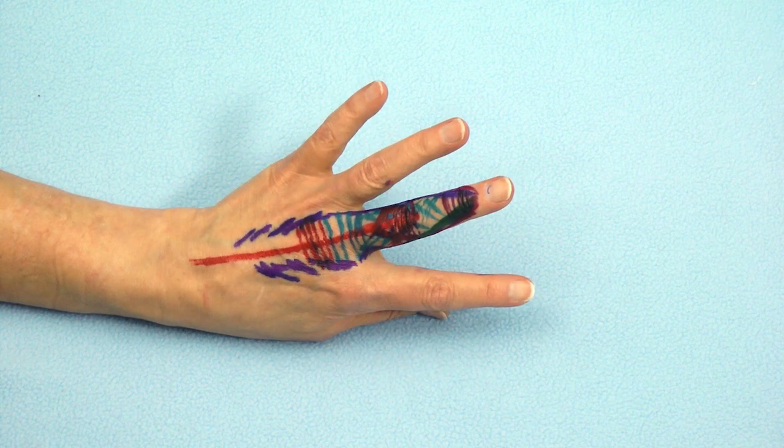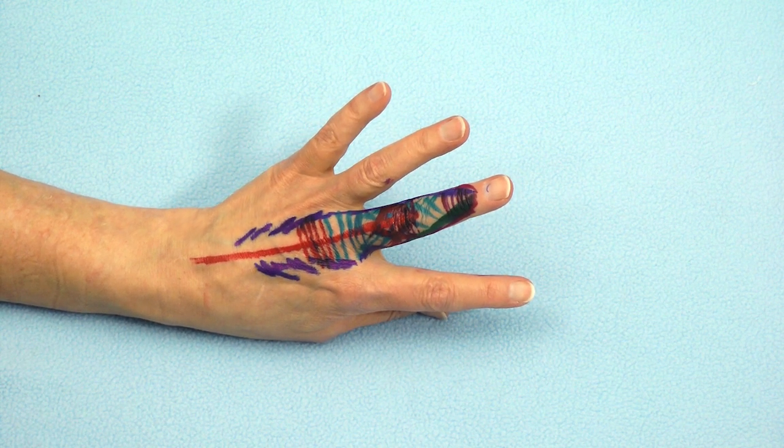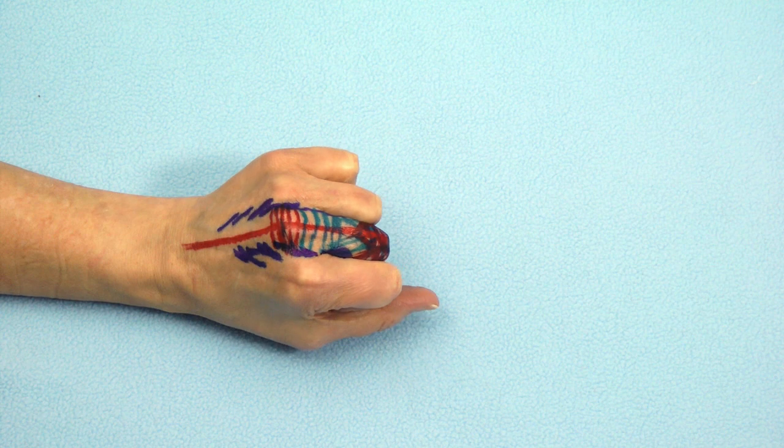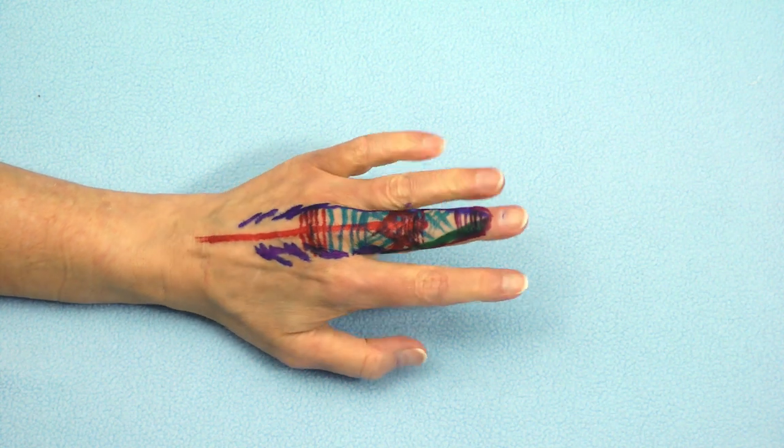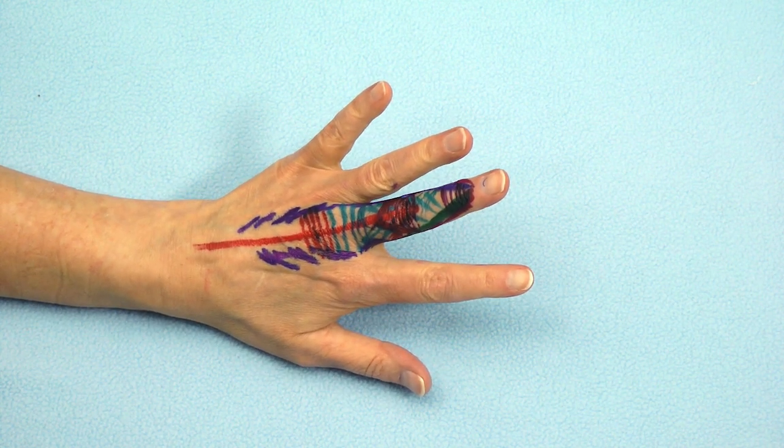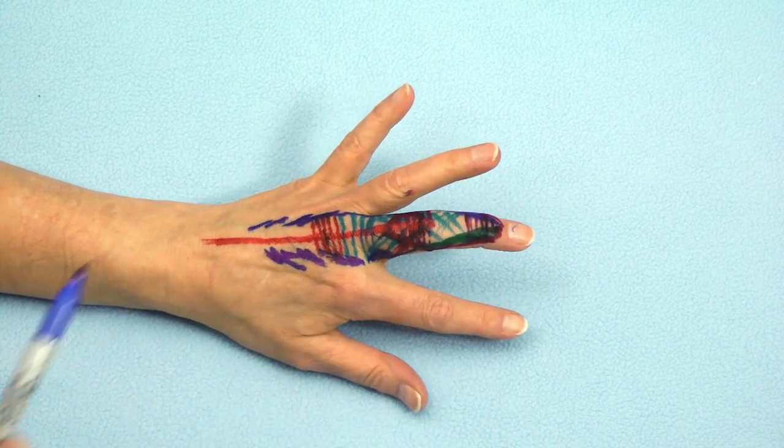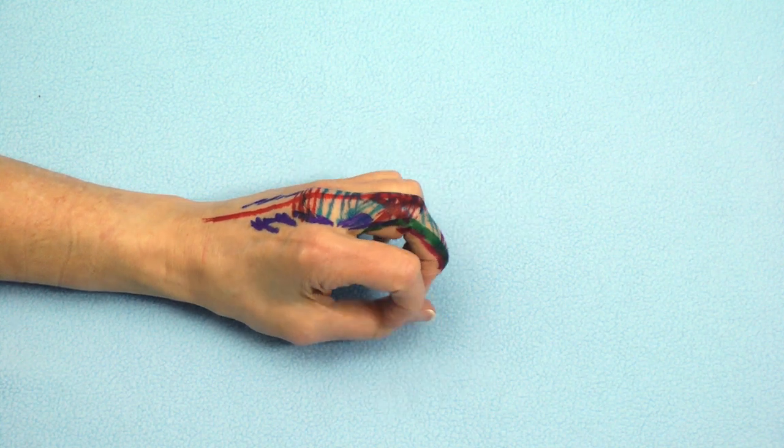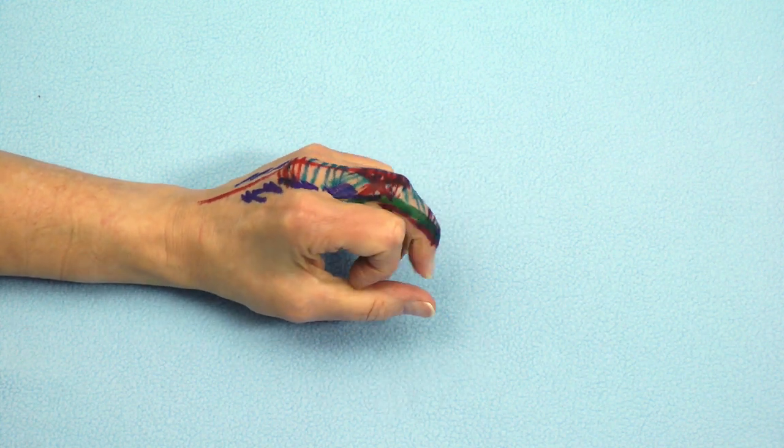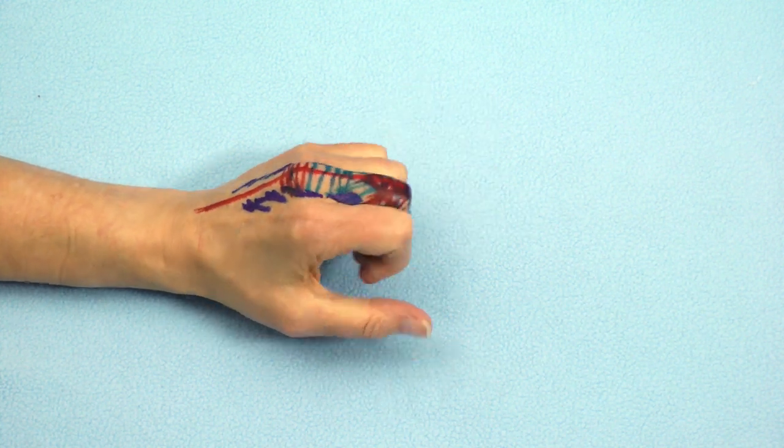They keep the extensor digitorum communis stabilized centrally at that joint, particularly during flexion. The transverse fibers here and the oblique fibers are more active based on the position of the metacarpal phalangeal joint.